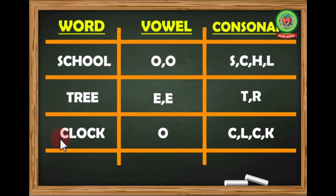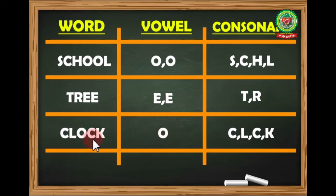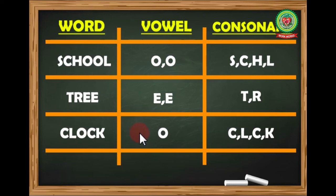For 'clock': C, L, C, and K are consonants; O is the vowel. Keep practicing this way with all your words. I hope you have all understood the topic very well. Keep practicing and complete your related exercises given in your homework. Thank you.